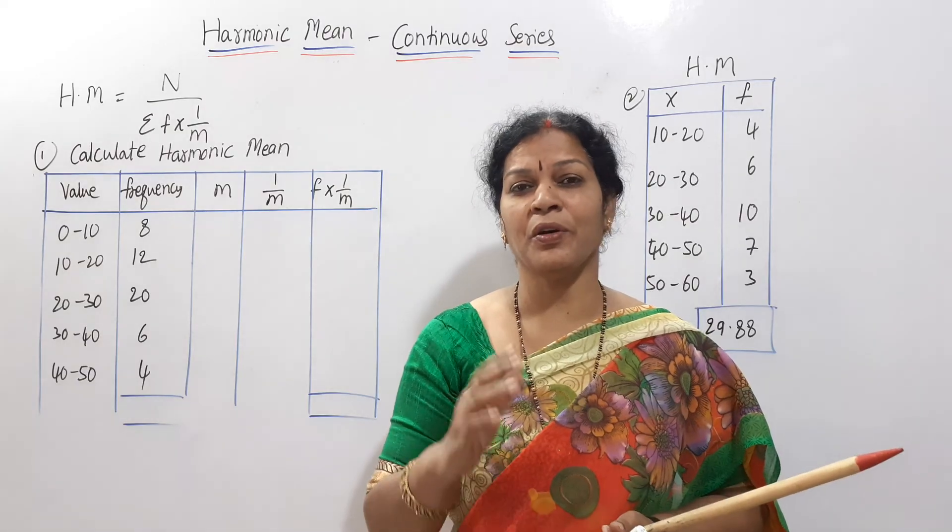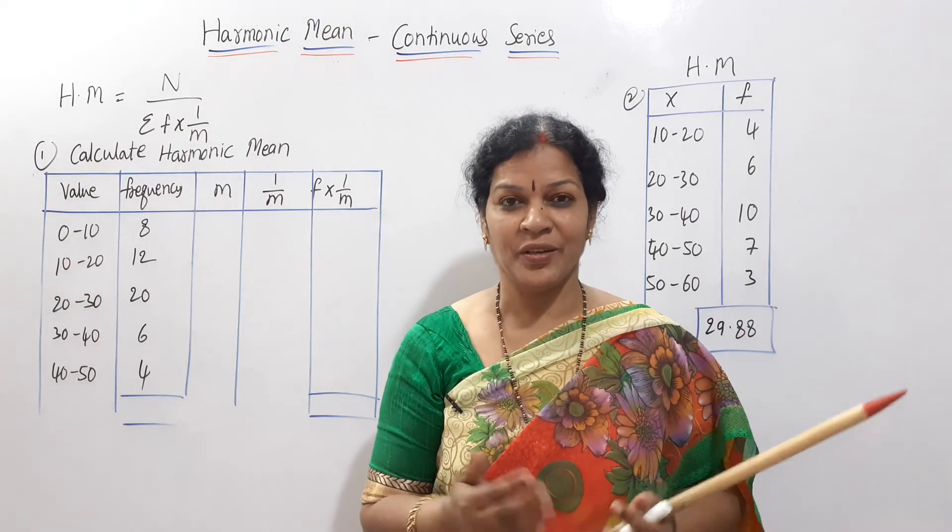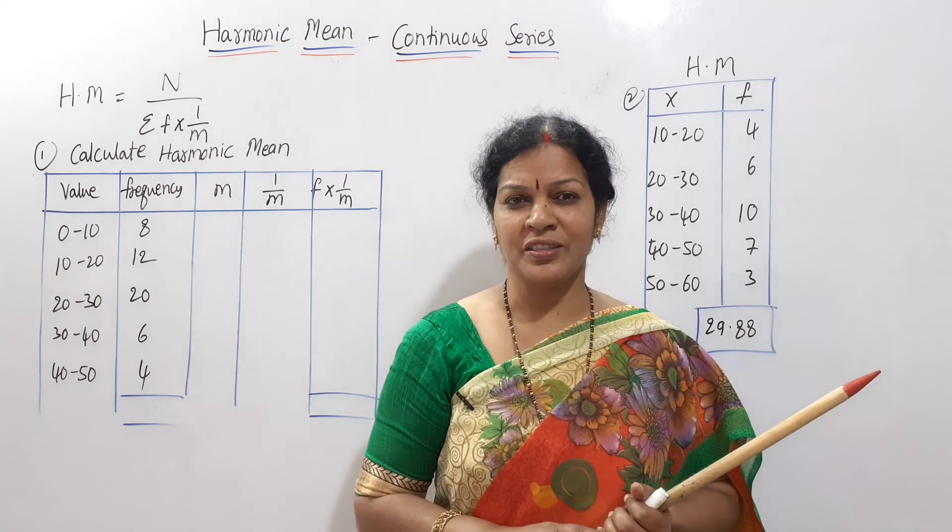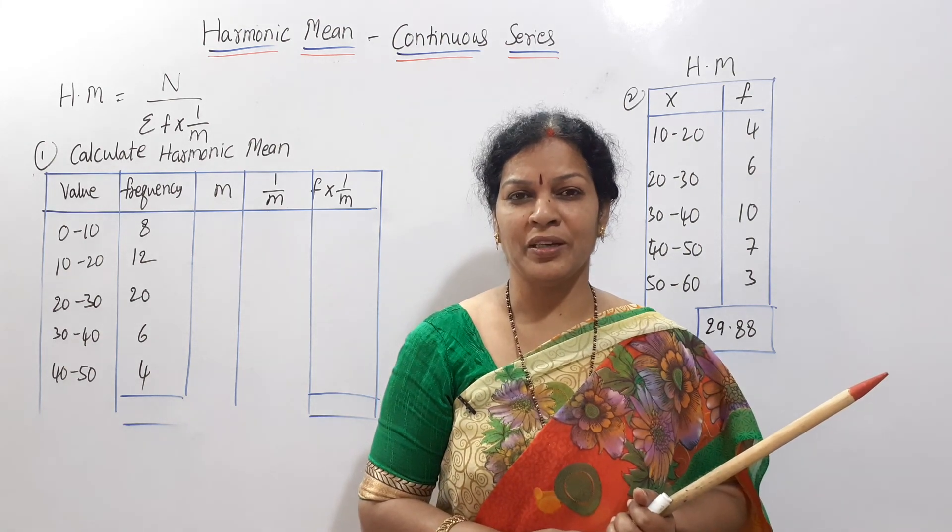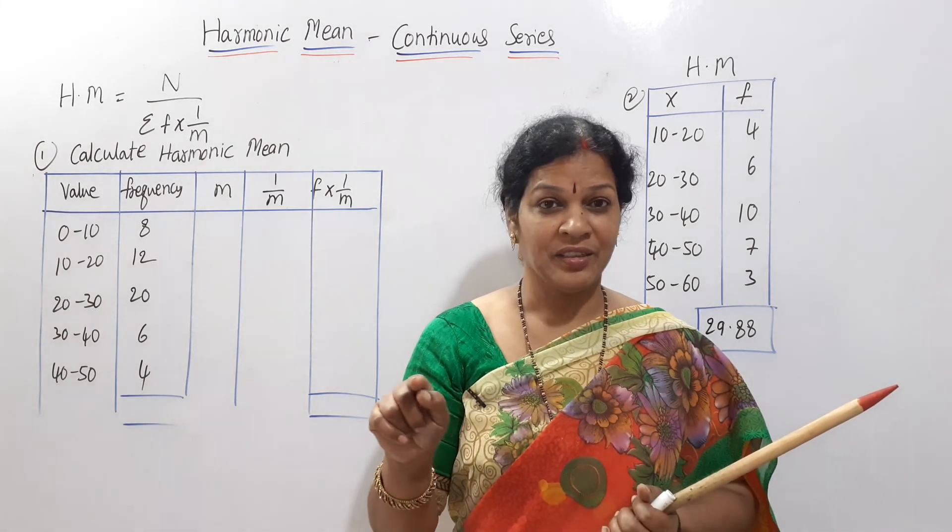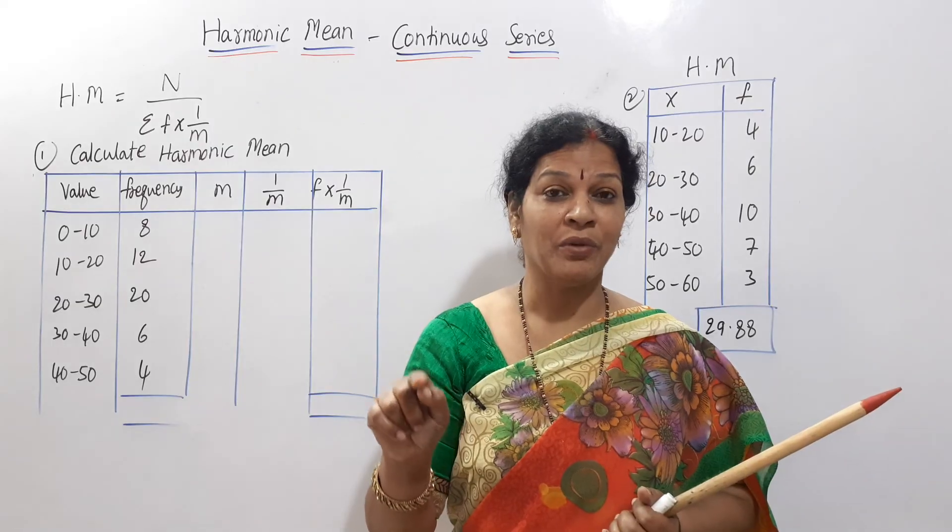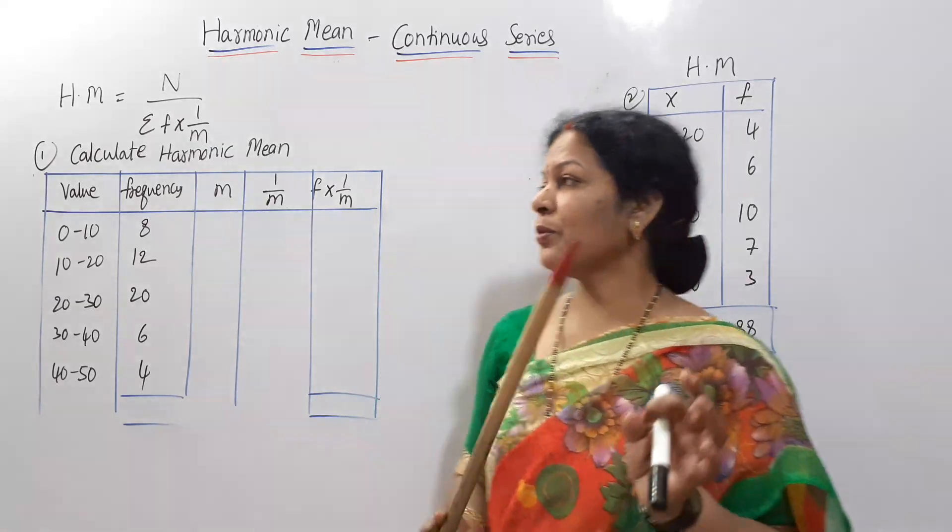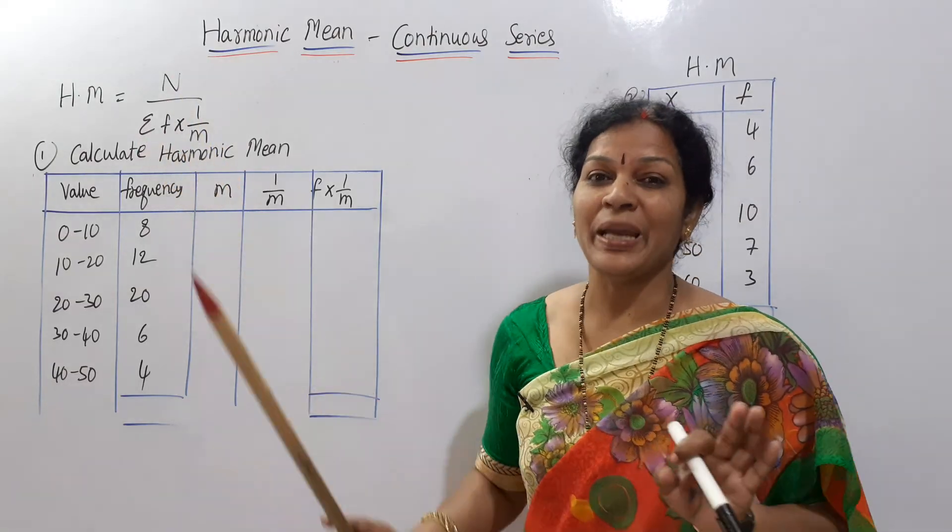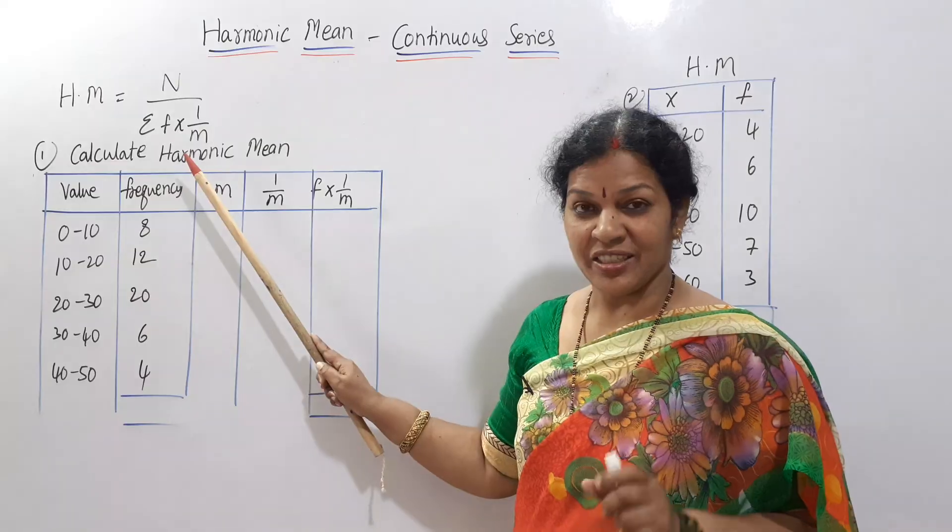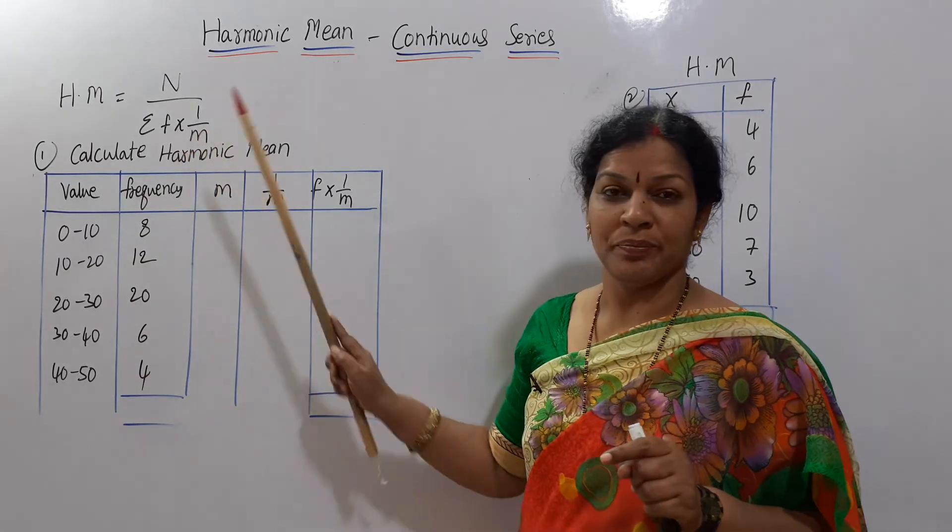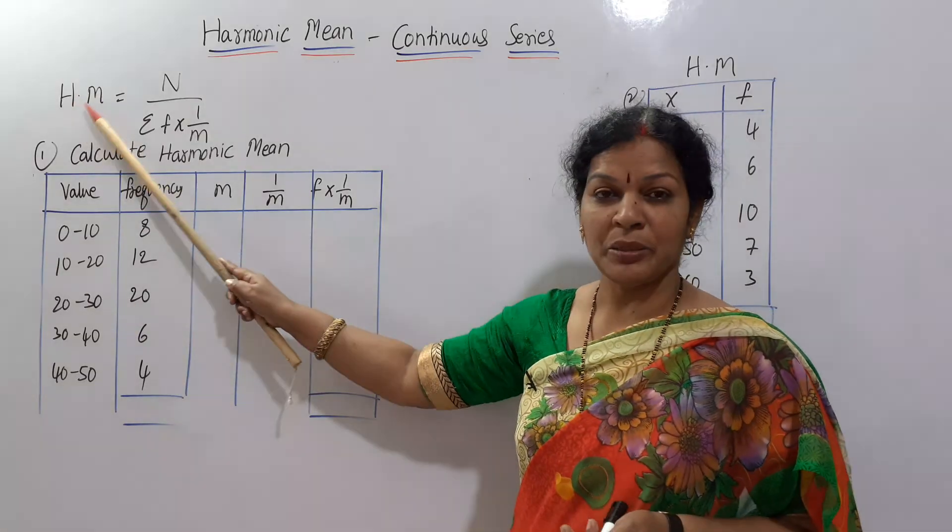Anyone can follow, it is free of cost. Now we will see continuous series of harmonic mean. What was the formula of discrete series? Harmonic mean is equal to N by sigma F into 1 by X, right. The same formula here, small change: N by F into 1 by M. Earlier we kept X in discrete series, X is replaced with M.